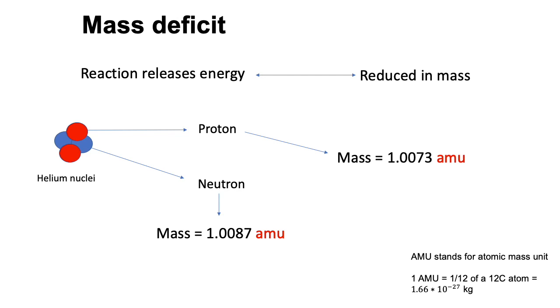AMU stands for Atomic Mass Unit, and it is defined as 1 over 12 of a carbon-12 atom, or 1.6 times 10 to the minus 27 kilograms. The mass of a neutron is approximated to be 1.0087 AMU.